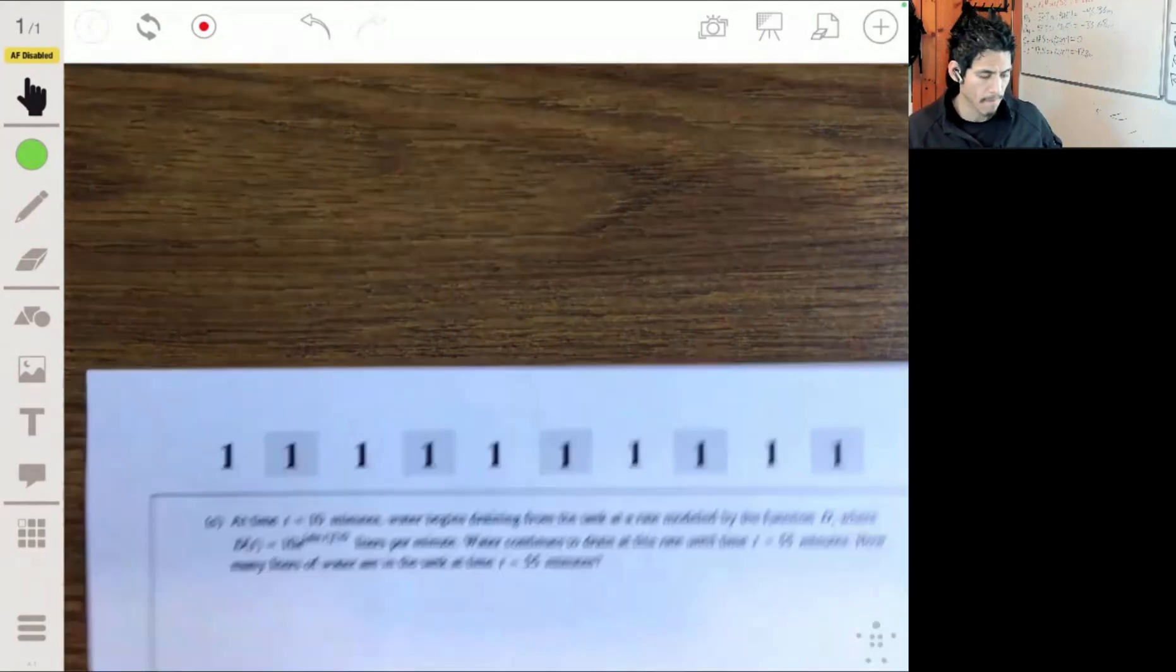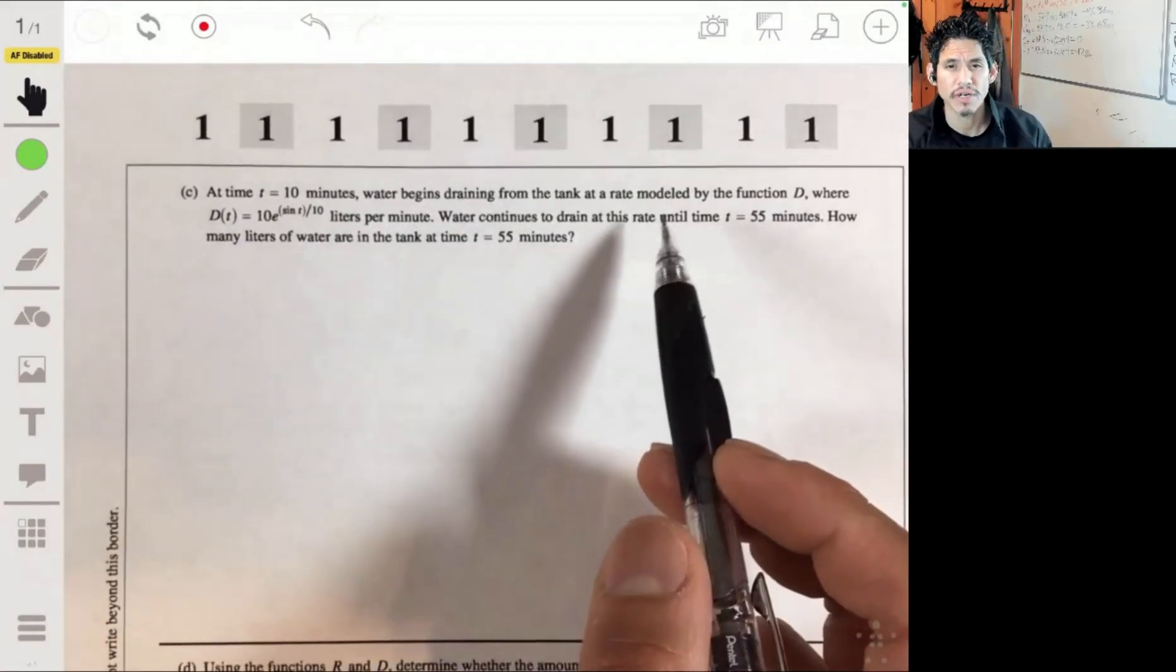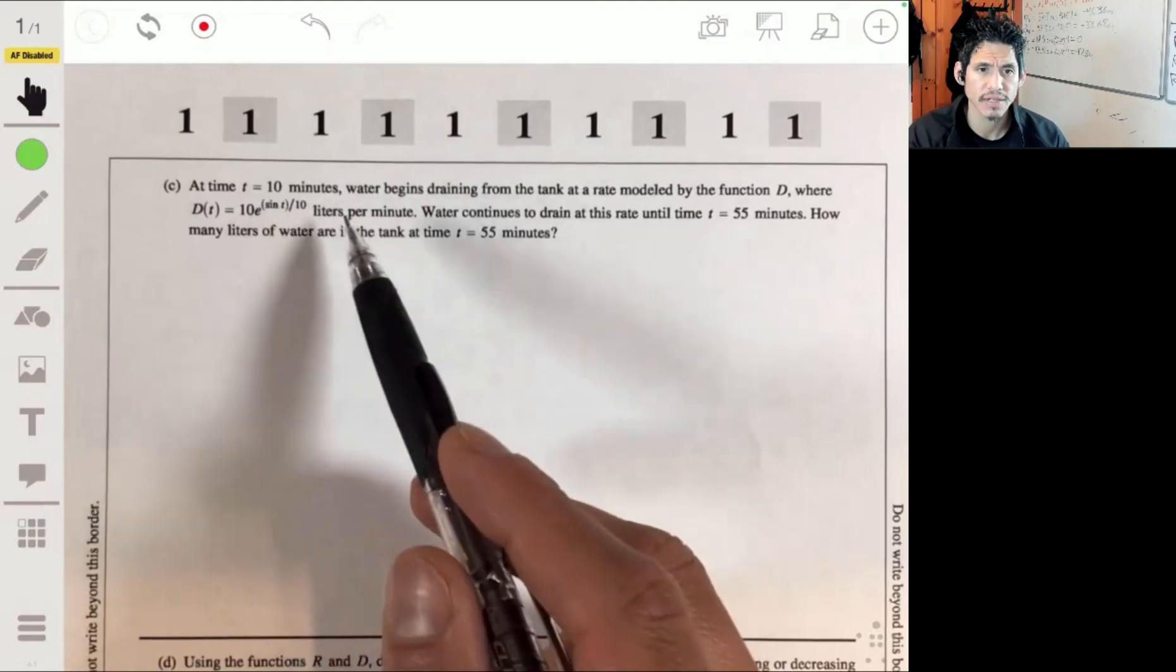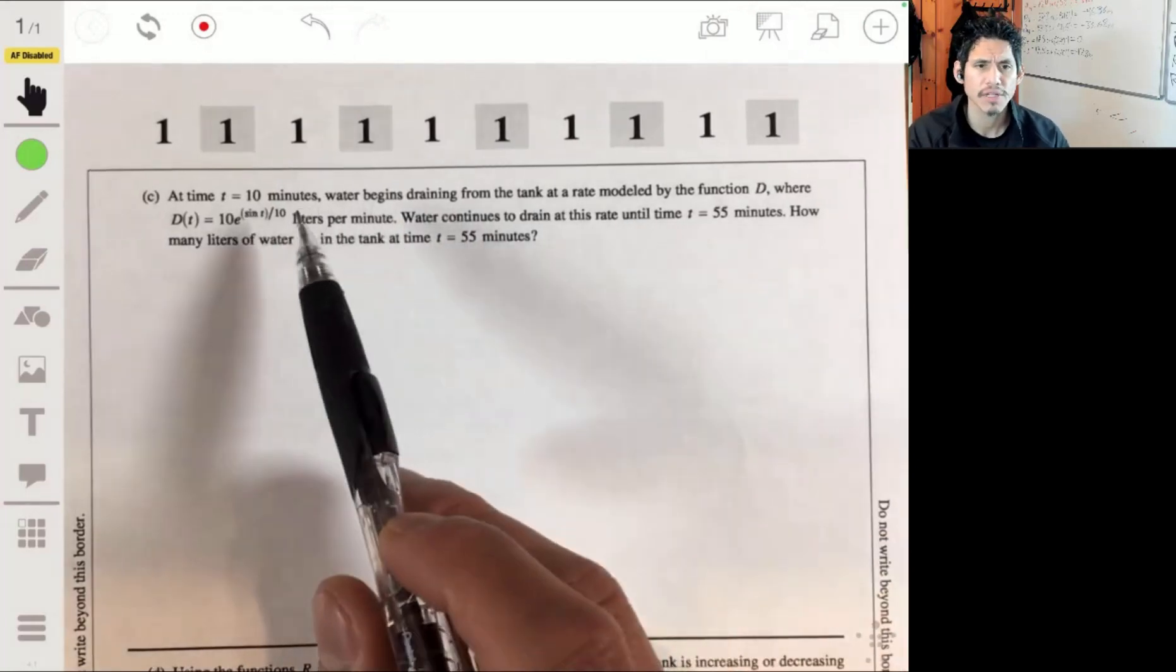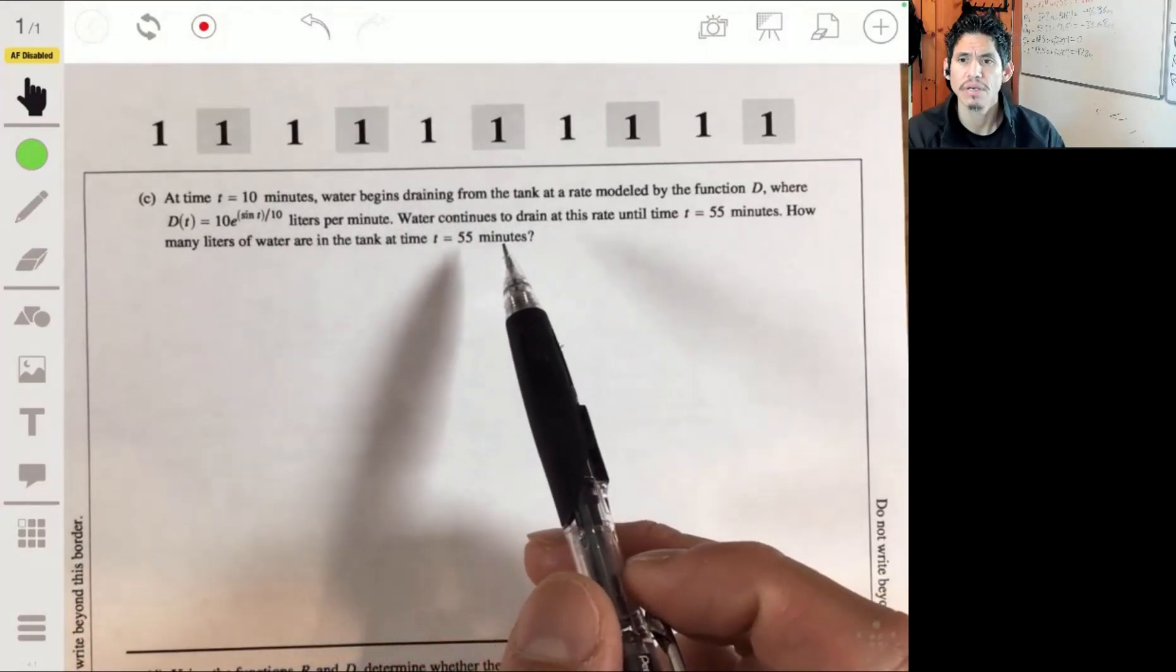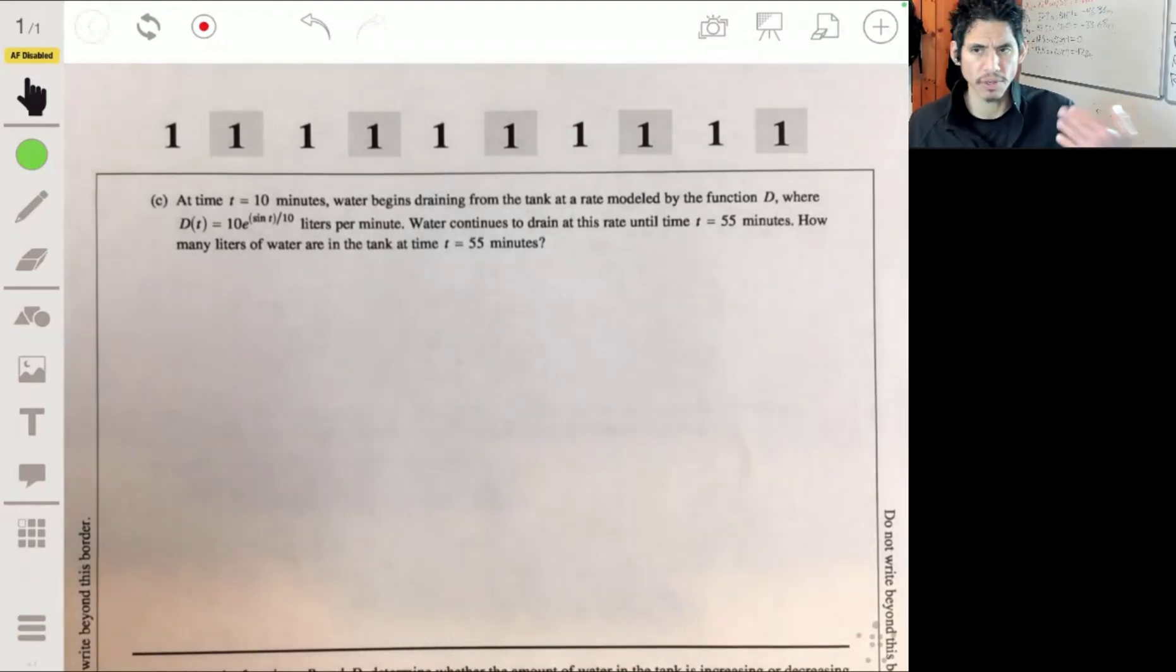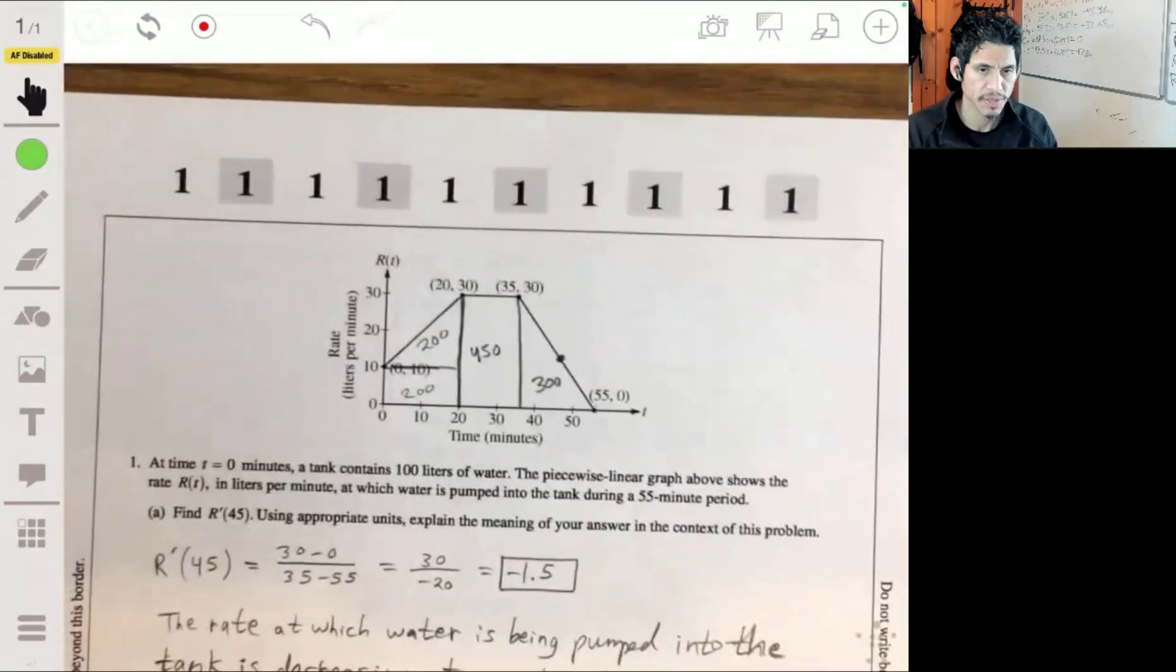Part C: At time t equals 10 minutes, water begins draining from the tank at a rate modeled by the function d(t) = 10e^(sin(t/10)) liters per minute. Water continues to drain at this rate until time t=65 minutes. How many liters of water are in the tank at time t=55 minutes? Okay, so just think about what this does. This just takes water away. So first we want to see how much water there is in total at 55 minutes, and then we're going to subtract how much water was taken away from 10 to 55 minutes.